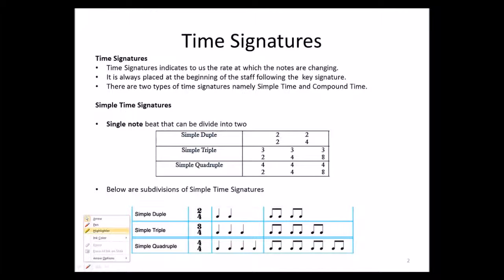Time signatures indicate to us the rate at which the notes are changing. They are always placed at the beginning of the staff following the key signature. There are two types of time signatures: simple time and compound time. Simple time signatures can be characterized as a single note beat that can be divided into two.